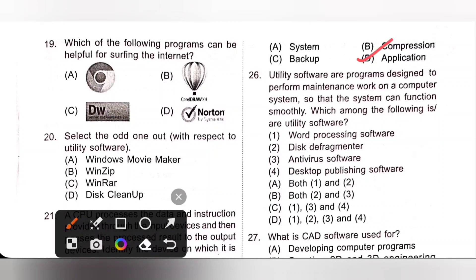Question 26. Utility software or programs designed to perform maintenance work on a computer system so that the system can function smoothly. Which among the following are utility software? Word processing software - no. Disk defragmenter - yes. Antivirus software - yes. Desktop publishing software - no. So 2 and 3. Disk defragmenter rearranges files in continuous manner and improves the overall performance of computer. Similarly, antivirus software protects our computer from viruses. Both of these come under the category of utility software. Option B is the correct answer.